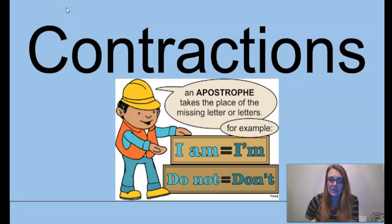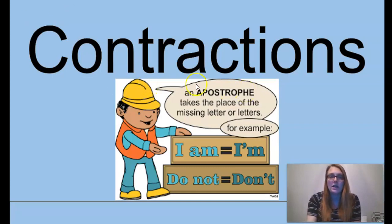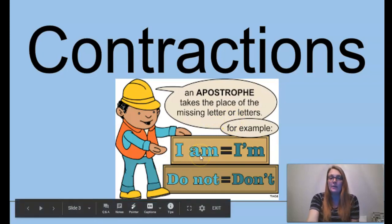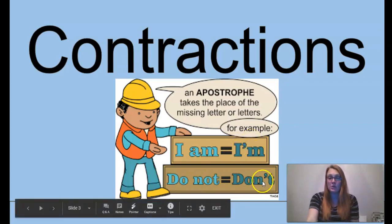Reviewing contractions, which we've talked about before — a contraction is when you have two words and you put them together. One of the letters is taken out and you use an apostrophe to take the place of that missing letter or letters. For example, I am — the A is gone and you have an apostrophe in its place to make I'm. Do not becomes don't, and the apostrophe is in the place of the O.